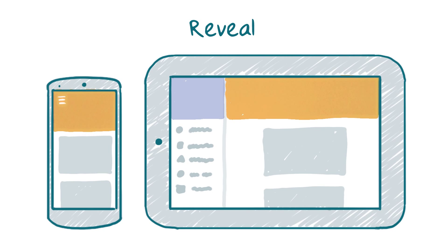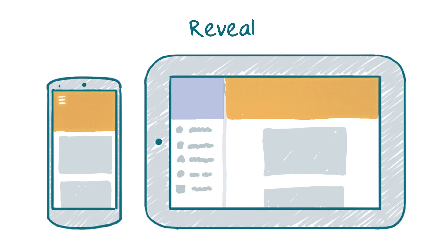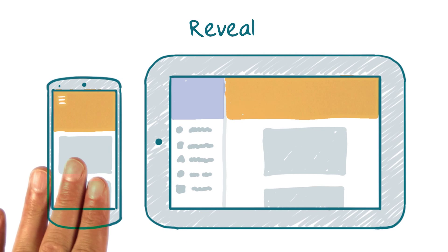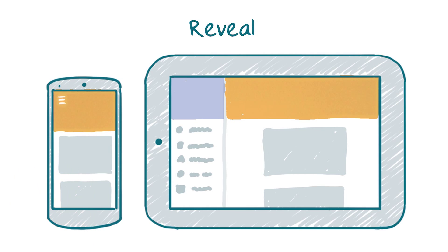Firstly, you can show additional content on the screen. Instead of just filling the extra space, we can instead show more content there. One way to do this is to reveal previously hidden UI elements. For example, you might use an off-screen navigation drawer on small devices, but then pin it on screen on larger devices.